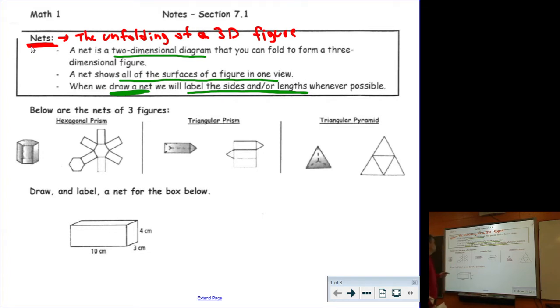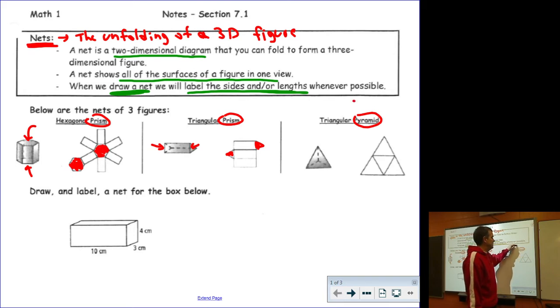I've given you three diagrams of basic nets. The first is a hexagonal prism. The top and bottom are hexagons, and in a prism, the other sides are rectangles or sometimes parallelograms if it's not a right prism. Here, I have a triangular prism, so the top and bottom are triangles, and wrapped around those are three rectangles. Last, I have a pyramid. A pyramid is made up of some shape plus triangles. In this case, all four sides are triangles. Those are three basic nets.